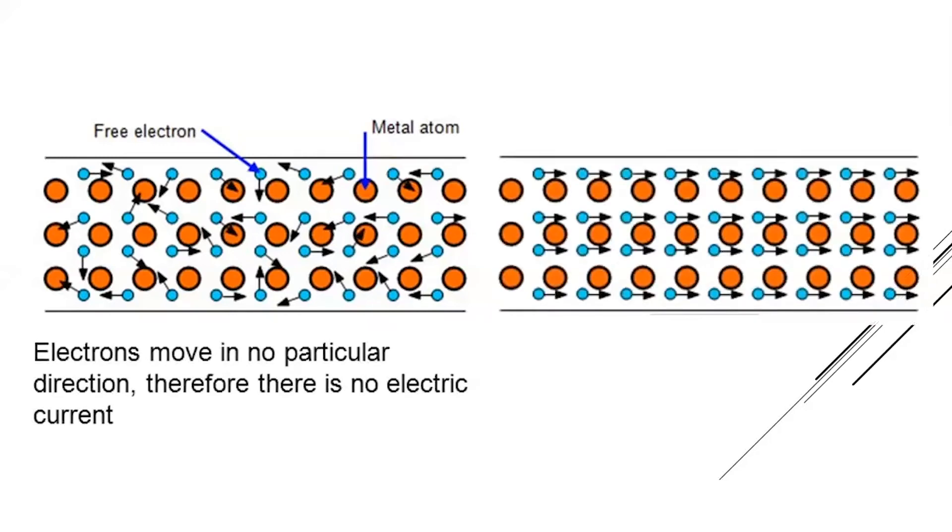So, what you will see is that all of the electrons will now start to move in the same direction. Now, they start to flow. This movement of electrons is basically called the electric current.